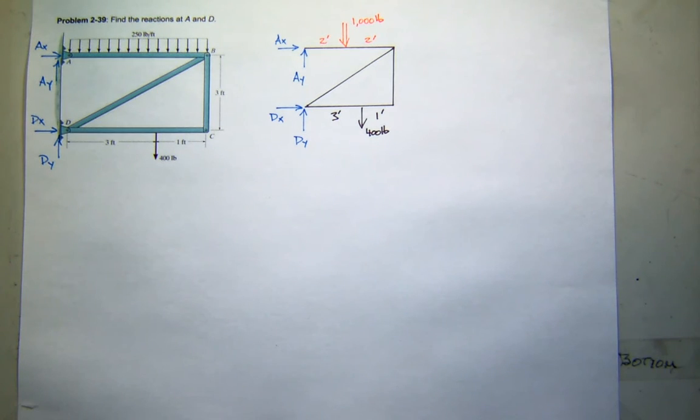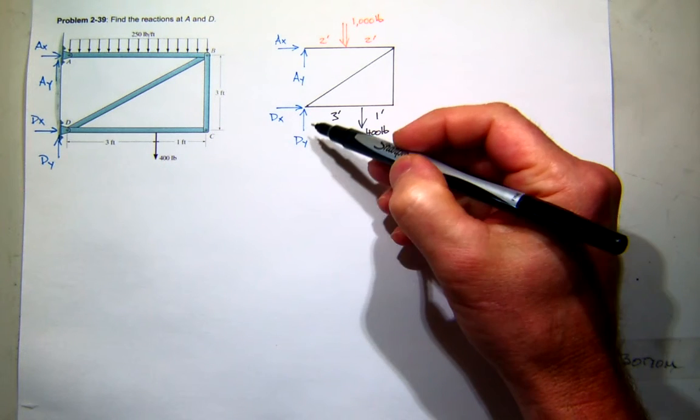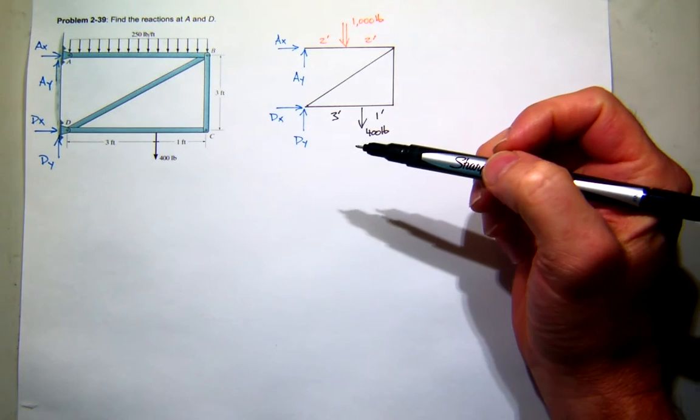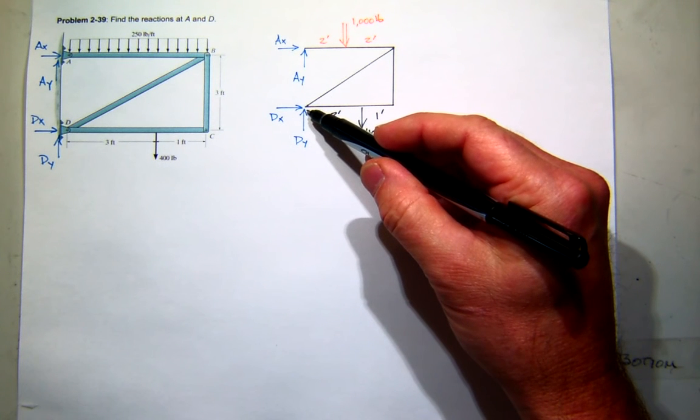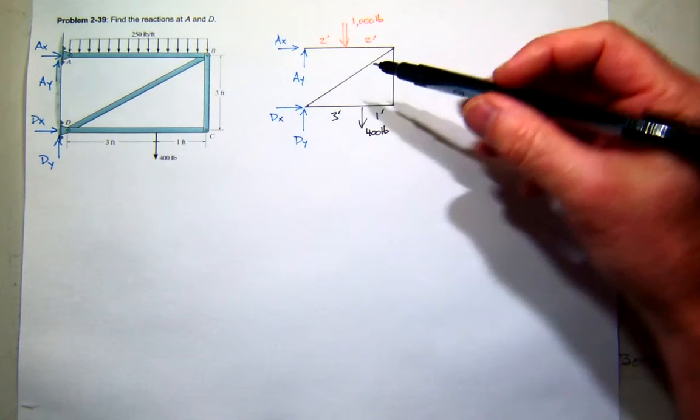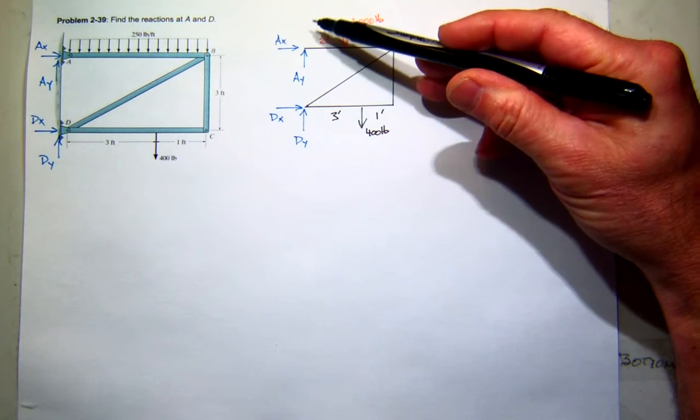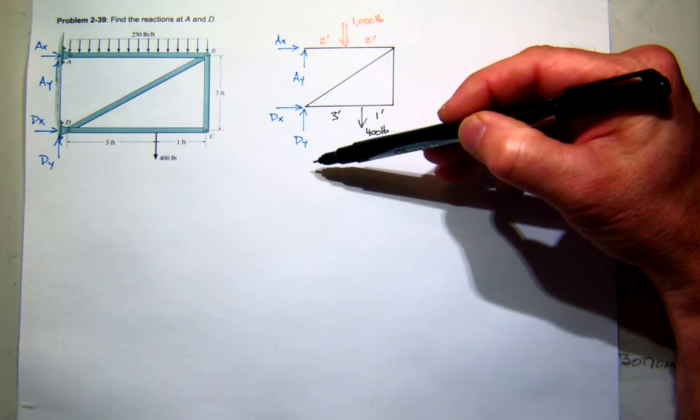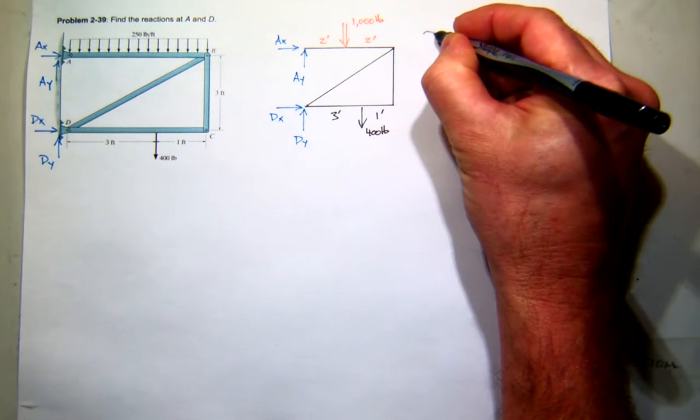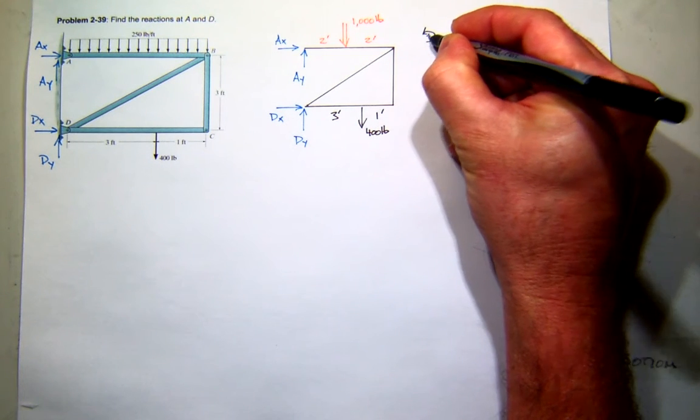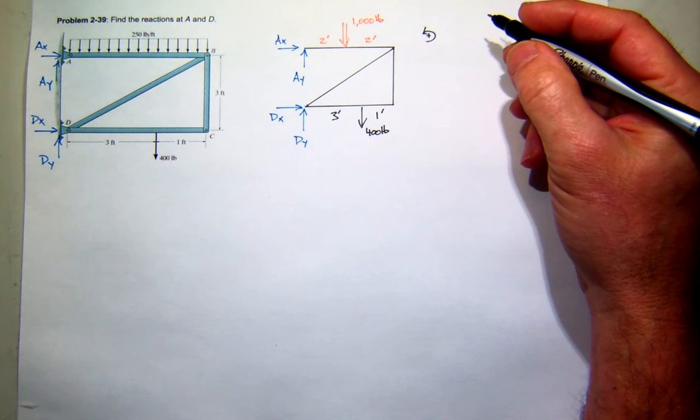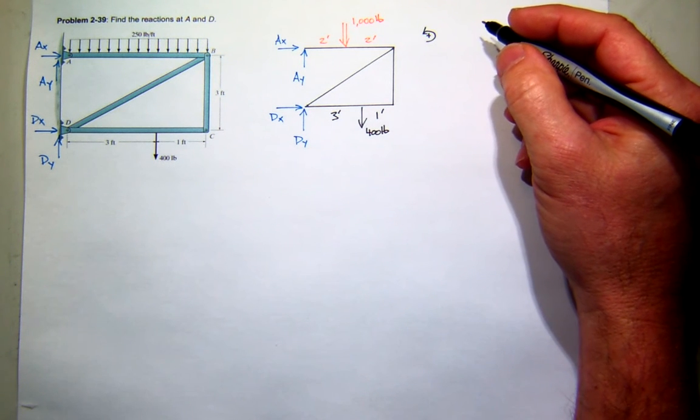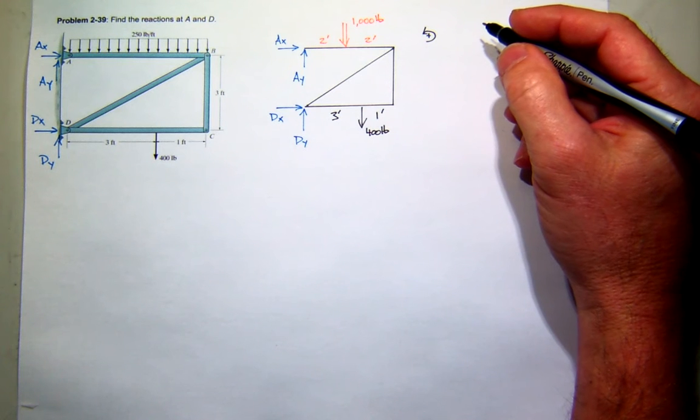So what I think would be a good place to try, and we've talked about this before, is whenever you have pins, a pin's a good place to sum moments, right? Because two of those unknowns are concurrent at that point. And the other neat thing about this problem is you'll notice that both the y components are collinear. So which one do you want to sum moments about? A or D?